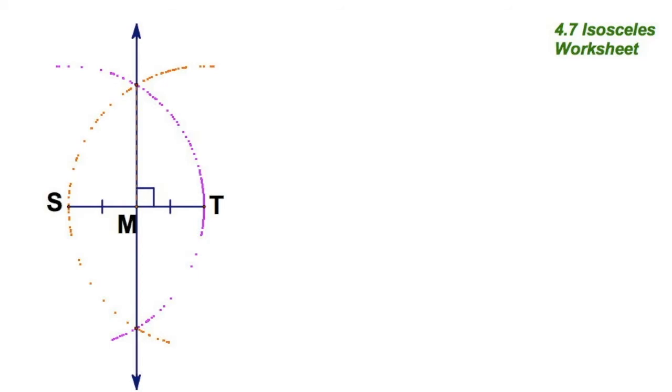Now, something different this time. I'm going to pick a random point W. It can be up here, it can be down there. A random point on the perpendicular bisector. For demonstration, I'm going to put it up there. And I'm going to connect some segments there.